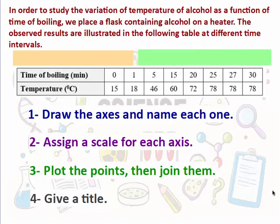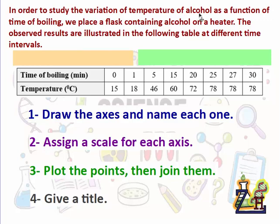Now let's make an example and try to draw a graph. In this experiment, in order to study the variation of temperature of alcohol as a function of time of boiling, we place a flask containing alcohol on a heater. The observed results are illustrated in the following table at different time intervals. The objective of the experiment is to study the variation of temperature of alcohol as a function of time of boiling.